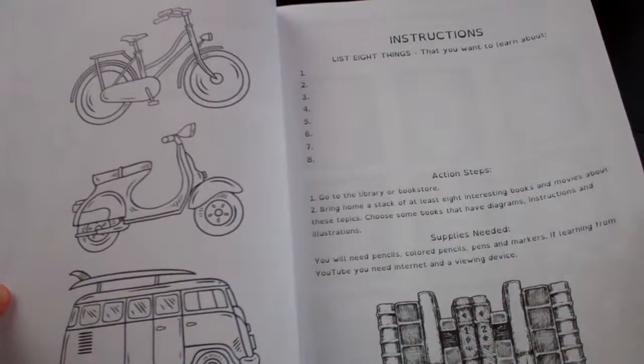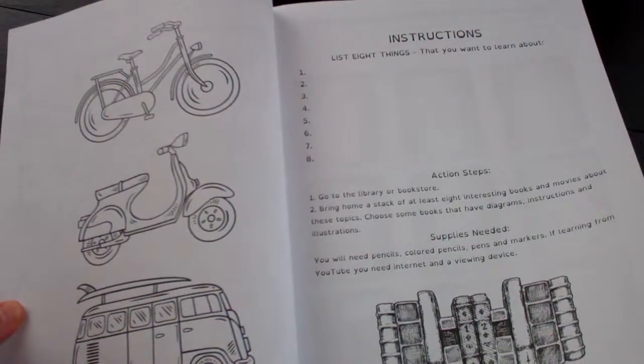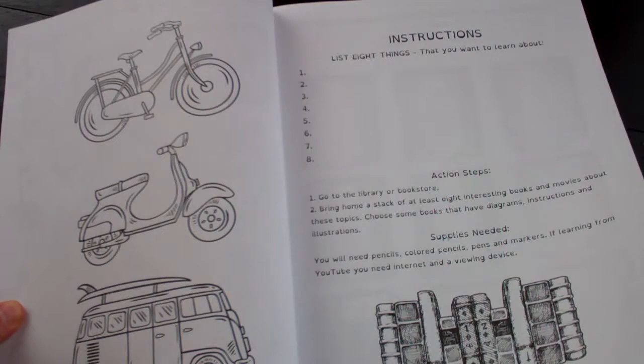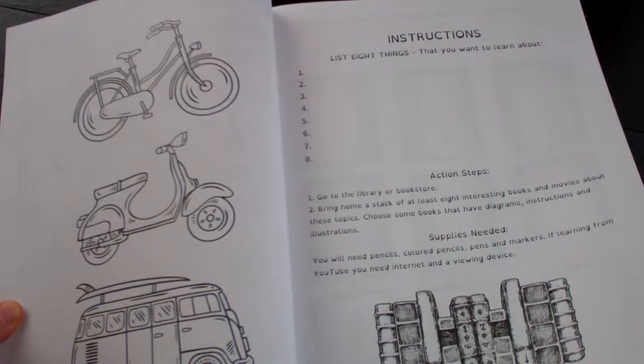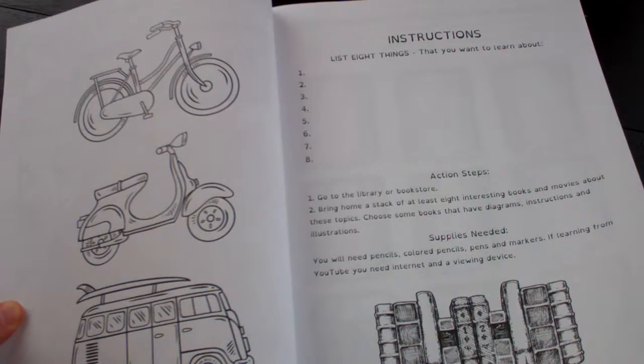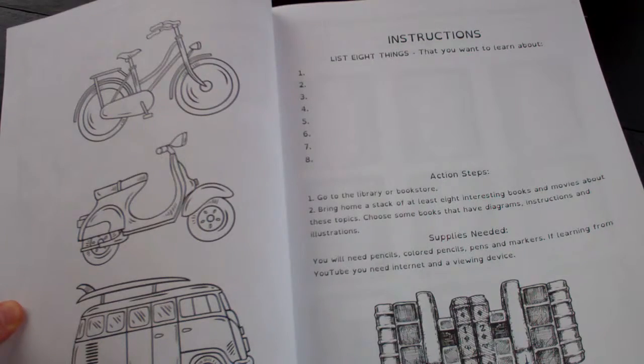As you can see, this follows the typical Thinking Tree structure where you go to a library or bookstore, get books, movies, all kinds of different media to learn about subjects the child is interested in.